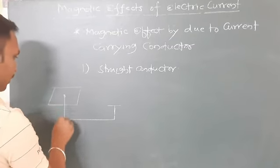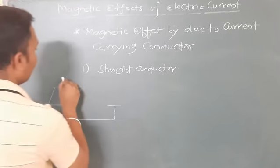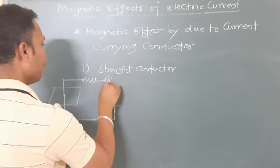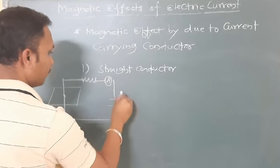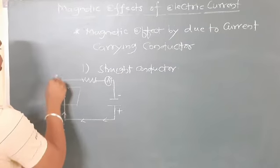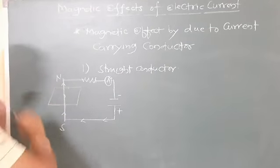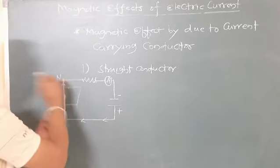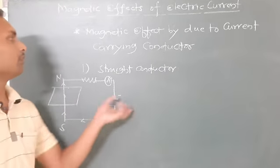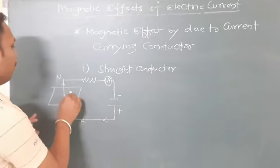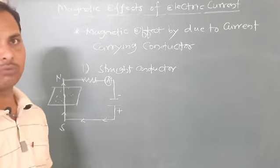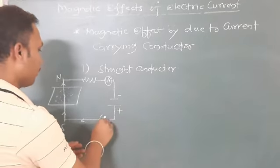Through this cardboard I will pass one conductor. I will place here one variable resistance and one ammeter. I will join this circuit — this is the negative end and this is the positive end. This is my conductor with current flowing from south to north.